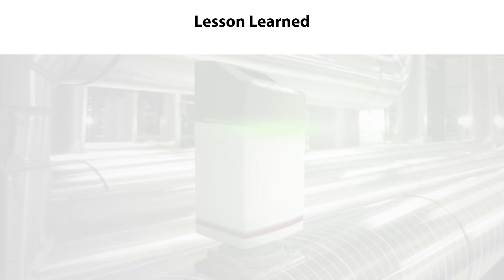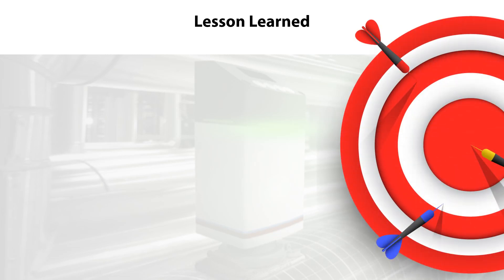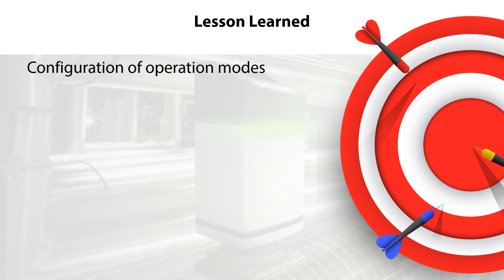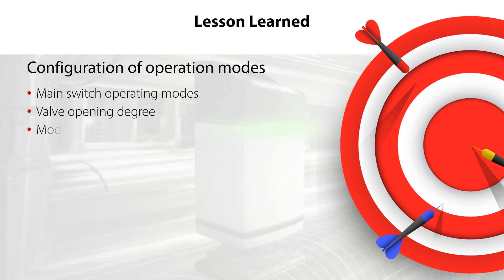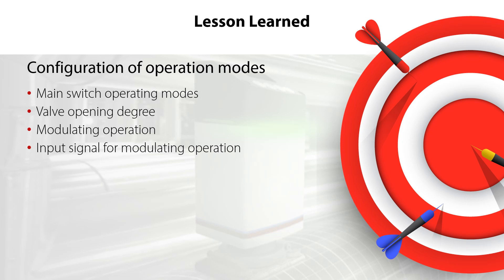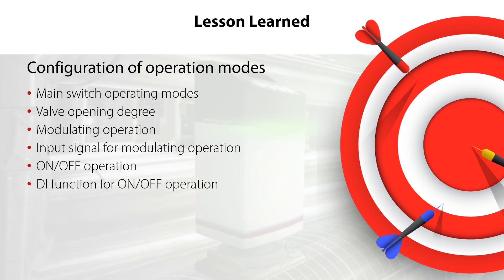You have now completed this Danfoss ICAD-B setup and configuration video about how to configure operation modes. This means that you know how to configure the ICAD-B main switch operating modes and how to configure the ICAD-B to a given valve opening degree when the main switch is set to Manual mode. You know how to configure the ICAD-B for Modulating Operation, for the Input Signal for Modulating Operation, for On-Off Operation, for the Digital Input Function for On-Off Operation, and finally for 3-point Control Operation — all ensuring a correct and safe system operation.